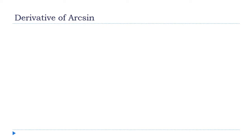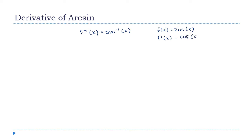I want to find the derivative of the arc sine — the inverse sine of x — using the formula for the derivative of the inverse. We start by letting f inverse of x be the inverse sine of x, just like we did with the logarithm. f inverse has to be the thing we're trying to find the derivative of, because that's how the formula works. This means f of x must be the sine of x, and f prime of x is the cosine of x.